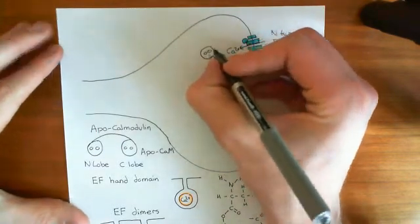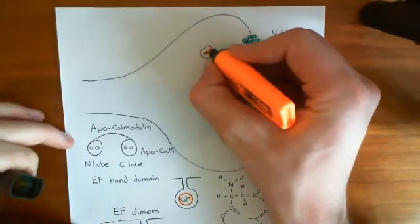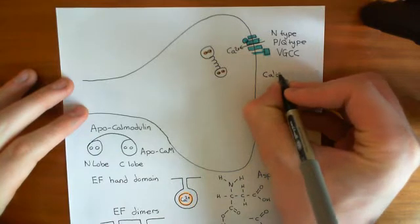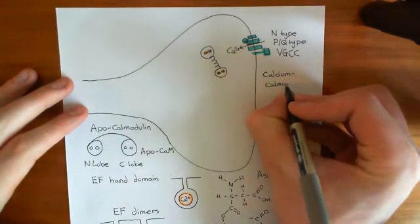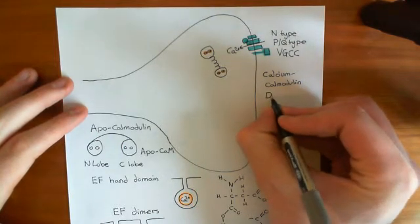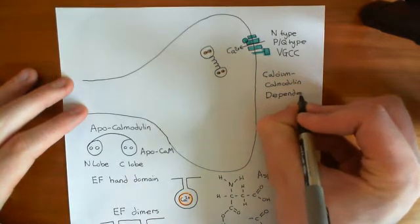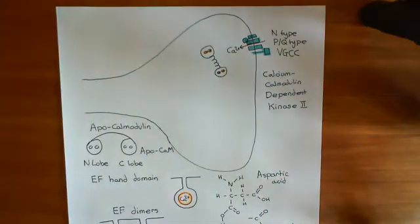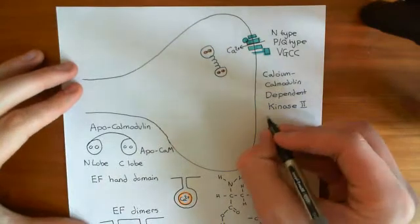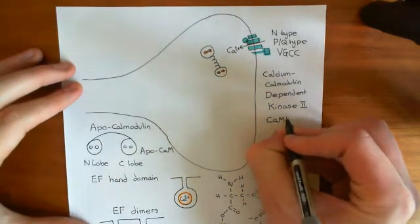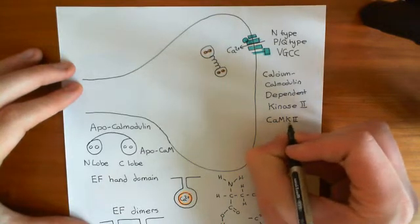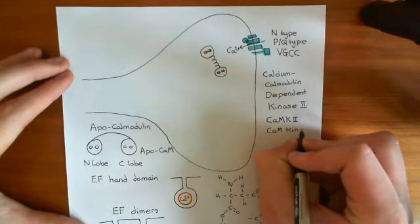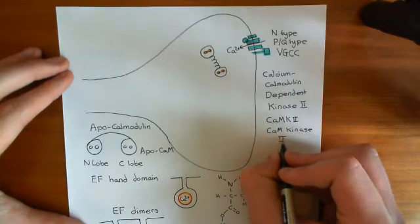Calcium-calmodulin complexes can activate an enzyme known as calcium-calmodulin-dependent kinase 2. This enzyme is often abbreviated to CAMK2 — CAM from calmodulin, K from kinase, and 2. People refer to it as CaM kinase 2, and you should read that as meaning the calcium-calmodulin-dependent kinase 2.